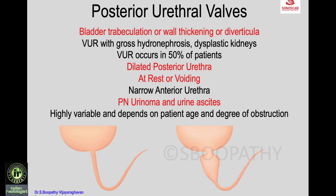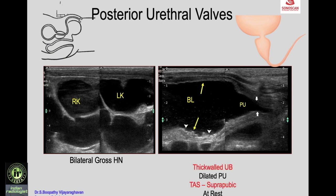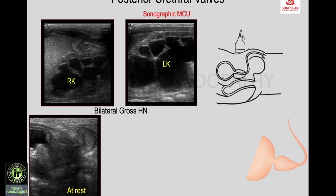A newborn with antenatal diagnosis shows bilateral gross hydronephrosis on scan. Sagittal scan of the bladder shows a thick-walled bladder with trabeculae, and transabdominal scan shows dilated posterior urethra at rest — the classical appearance of posterior urethral valves. Another case with bilateral gross hydronephrosis shows a thick-walled urinary bladder but without posterior urethral dilatation at rest.